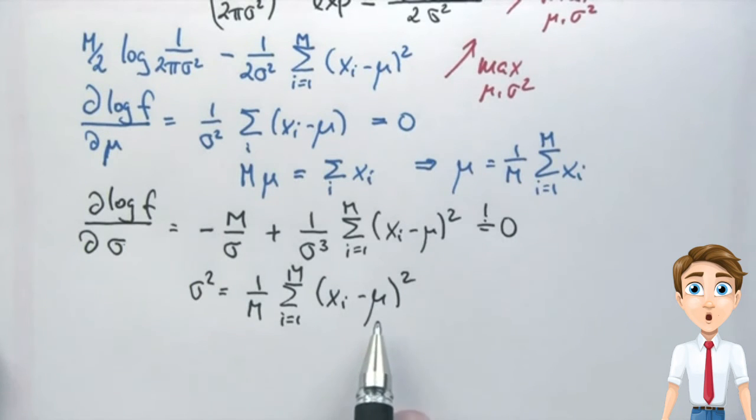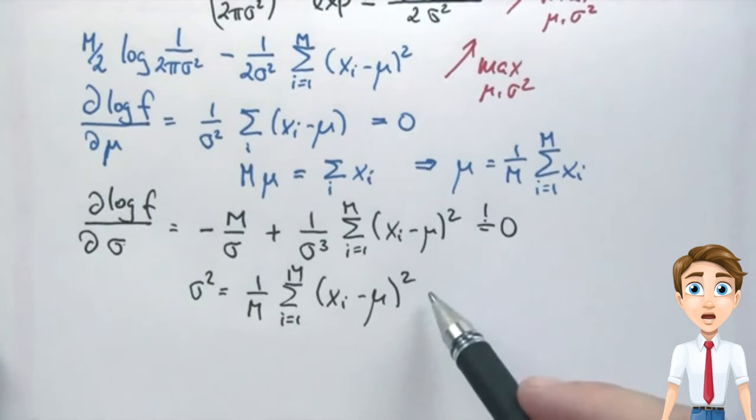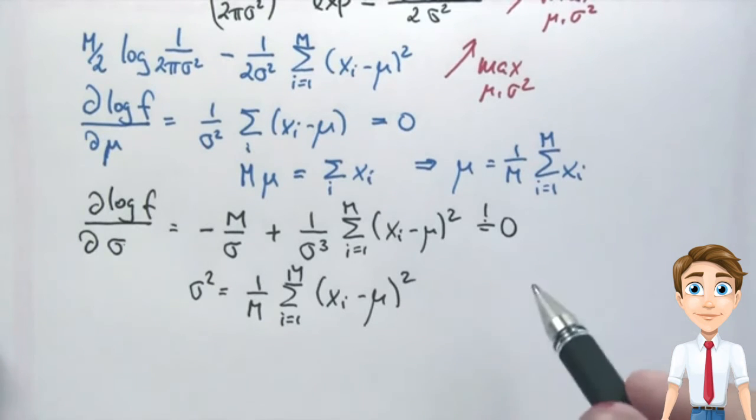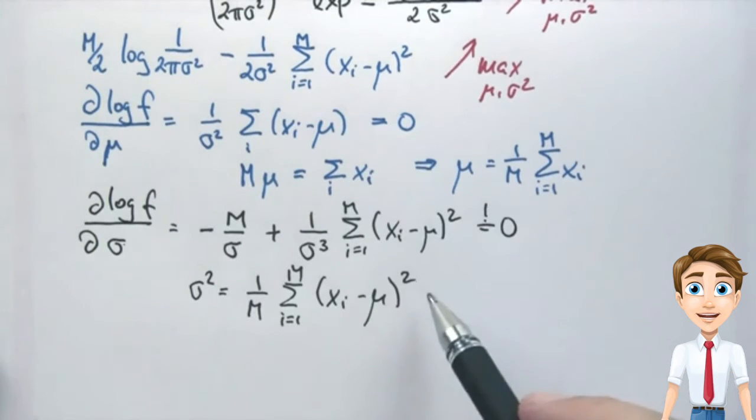You might take a moment to verify these steps over here, I was a little bit fast. But this is relatively straightforward mathematics. And if you verify them, you'll find that the maximum likelihood estimate for sigma squared is the average deviation of data points from the mean mu. This gives us a very nice basis to fit Gaussians to data points.